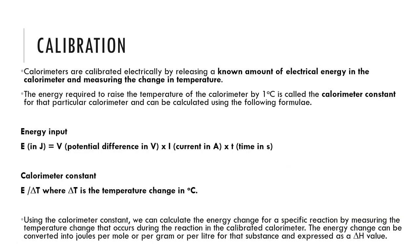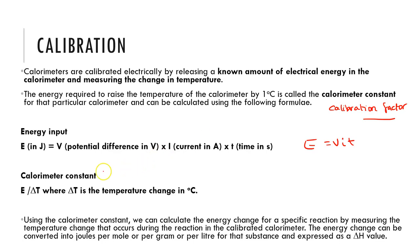The other thing about calorimeters is that we can calibrate them. We can put a known amount of electrical energy into the calorimeter and measure the change in temperature we see in the water. Once we've worked out the energy required to raise the temperature by one degree, this is referred to as the calorimeter constant or the calibration factor. Once we have that calibration factor, we can determine the amount of energy something has given out simply by measuring the change in temperature. We use E equals VIT — energy in joules equals voltage multiplied by current multiplied by time in seconds. Once we have that amount of energy, we divide by the temperature change to get our calorimeter constant.